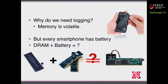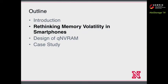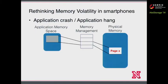With the battery, power loss is actually very unlikely to happen, especially as more and more smartphones ship with irremovable batteries, like the iPhone or the latest Google Nexus phones. Can the battery make DRAM non-volatile in smartphones? To answer that question, I'll discuss memory volatility in smartphones from the application's point of view. When an application crashes, the application process is terminated. When the application hangs, the user would probably close the app by killing the process — either way, data in the application's memory space is gone.